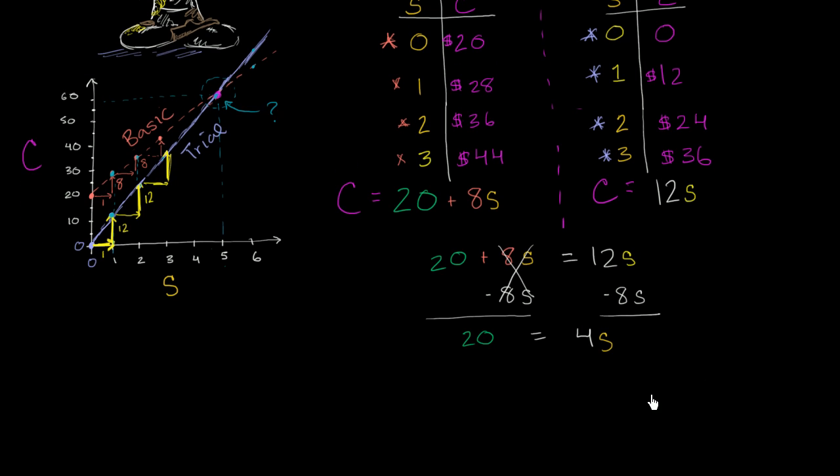And so now, we're pretty close. I just want an S on the right-hand side. What can I do to this equation so that I can have just an S on the right-hand side? Well, the easiest thing to do is to divide both sides by 4. I can't do it just to one side. And when I divide both sides by 4, what do I get for S? Well, on the right-hand side, 4S divided by 4 is just going to be S. And that's going to be equal to 20 divided by 4, which is 5.